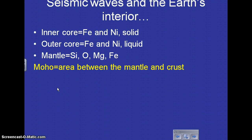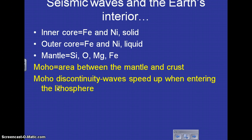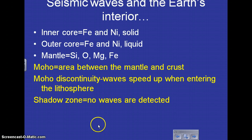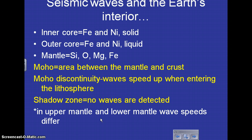The area right between the mantle and the crust sometimes is called the moho. And there is something called the moho discontinuity because waves have a tendency to speed up when they enter the lithosphere or the crust. So you can see that on the wave information you get from seismograph readings. There are areas within our layers of the earth that are considered to be in the shadow zone where no waves are detected. So there could be areas where it would not receive any kind of damage from an earthquake. In the upper mantle and lower mantle waves, speeds can differ. So by looking at those readings, you can tell what's going on with the layers of the earth.